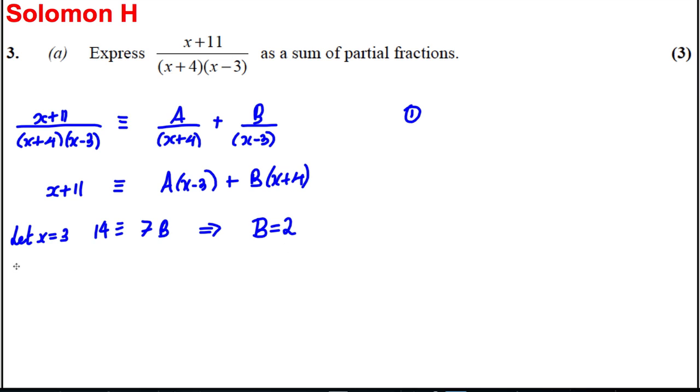Then we would let X equal negative 4, and this side we would therefore have 7 is identical to -7A, which implies that A must be equal to -1.